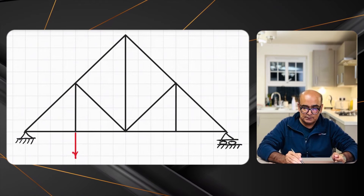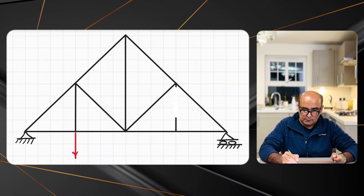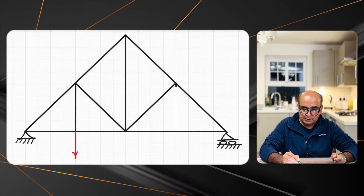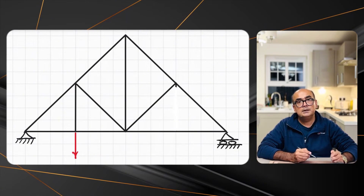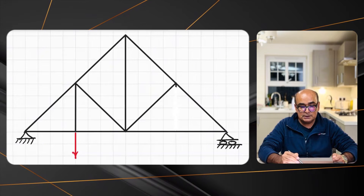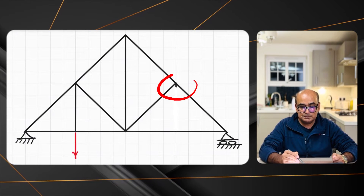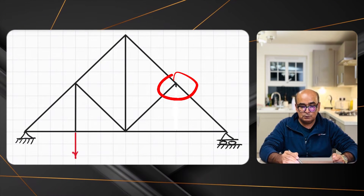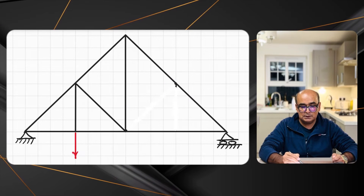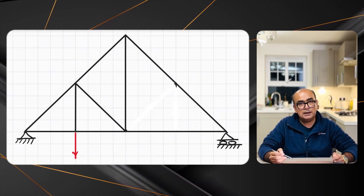You're right — it is this member. When we have this configuration, this is a zero force member. When we remove it, we can see another similar situation appears, giving us another zero force member. Let's remove that one too. Can we remove any other member? No, we can't.